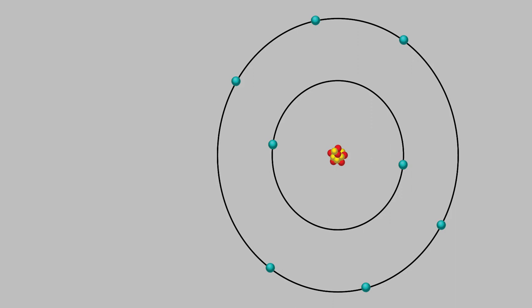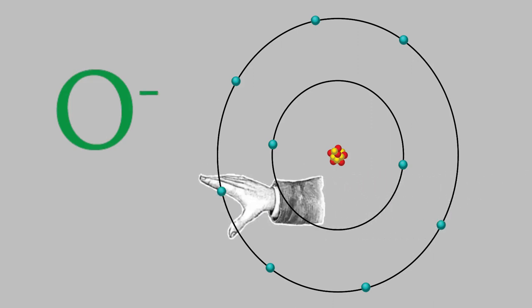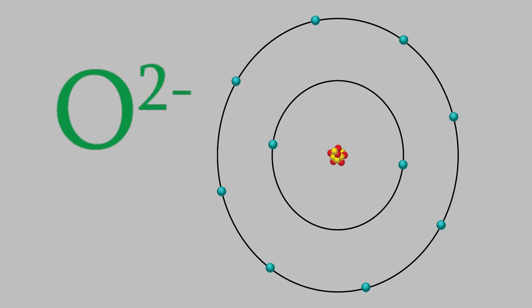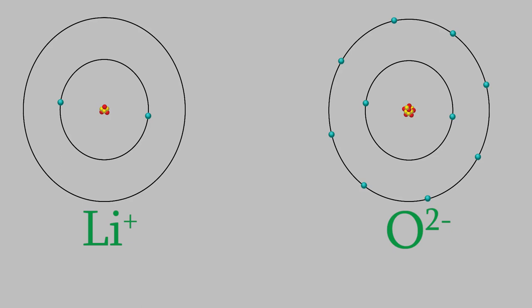We can create a positive ion by taking away electrons. In the same way, we can create a negative ion by adding electrons. For example, if we add an electron to this oxygen atom, we'll get an O minus ion. And if we add a second electron, we'll get an O 2 minus ion. Remember, the number comes before the negative sign.